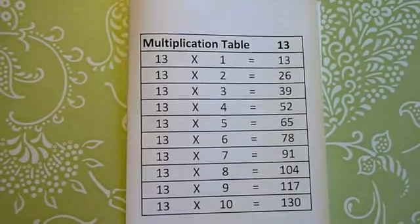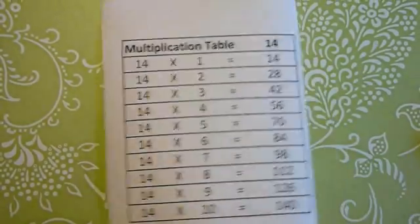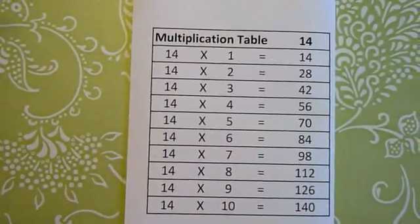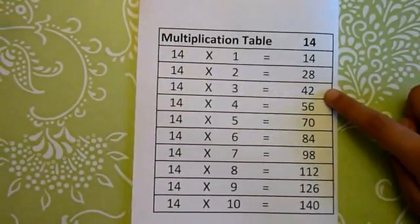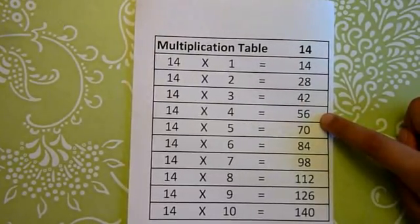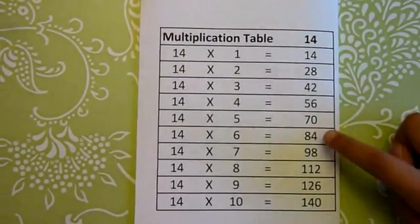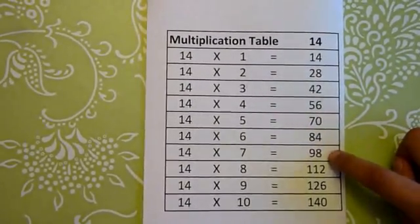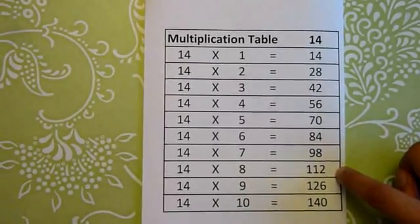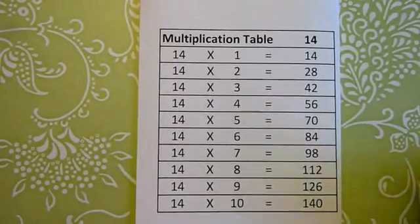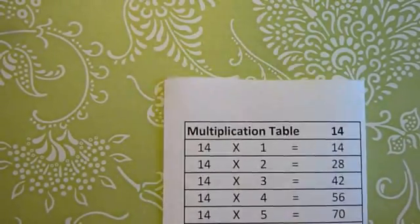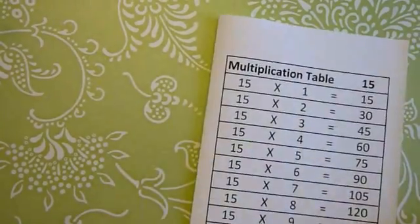Now we'll go on to multiplication table 14. 14 1s are 14, 14 2s are 28, 14 3s are 42, 14 4s are 56, 14 5s are 70, 14 6s are 84, 14 7s are 98, 14 8s are 112, 14 9s are 126, 14 10s are 140. And now we're going to go on to multiplication table 15.